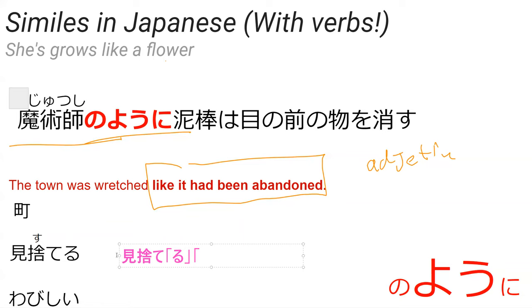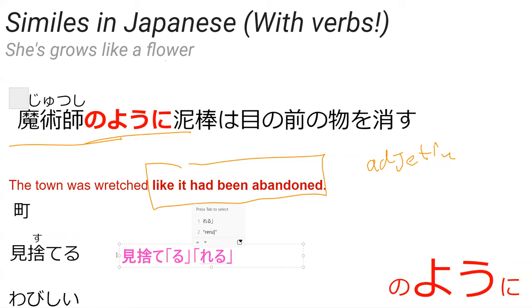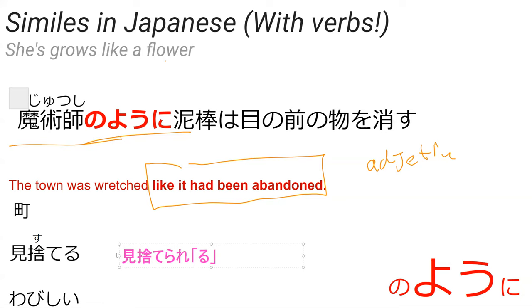We're going to be adding something like '-reru' or '-rareru' for passive form. Both passive and causative forms use something similar. So 'misuteru' in passive form becomes 'misuterareru.' Now, 'it had been abandoned' — what tense is that? It's past tense, so we need the '-ta' form: 'misuterareta' — 'had been abandoned/forsaken.'